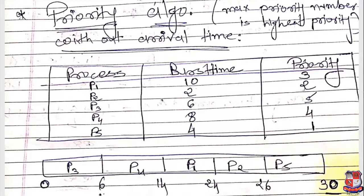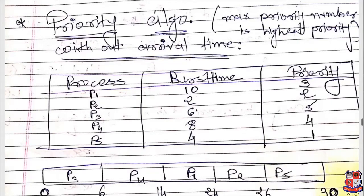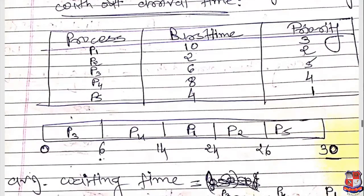Let us start with the max priority algorithm. The question gives five processes with burst time and priority number in a table. I consider P3 as the first process for execution because the maximum priority number equals highest priority — meaning whichever process has the largest priority number is considered first. So P3 is selected first. Its starting value is 0, plus burst time of P3 which is 6, so it completes at time 6.